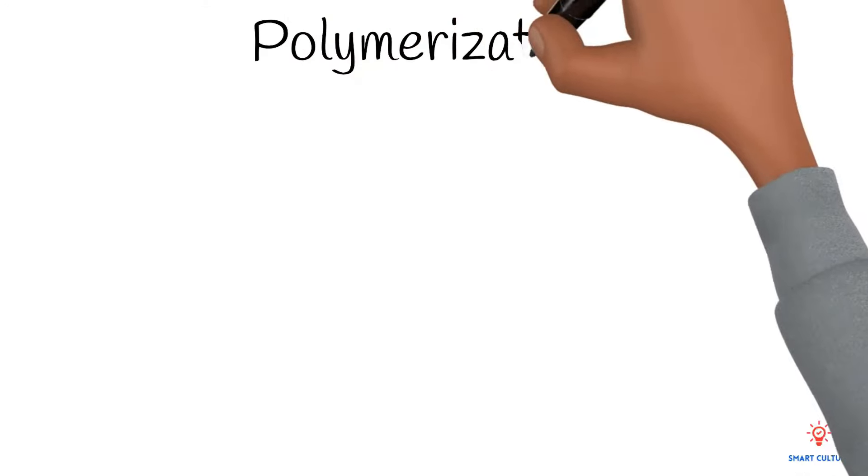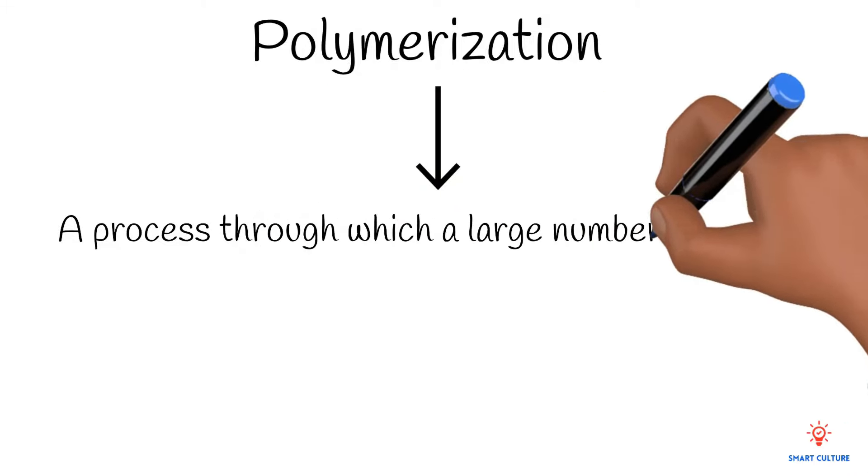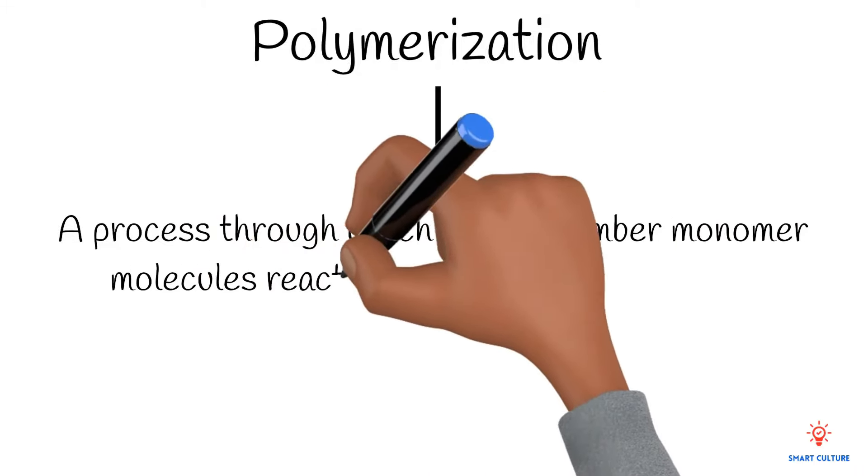Lastly, let's look at polymerization. This is a process through which a large number of monomer molecules react together to form a polymer.